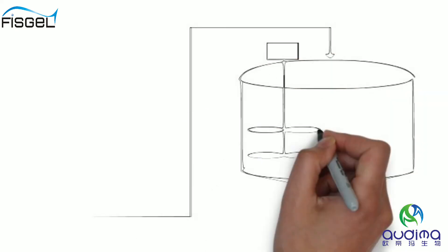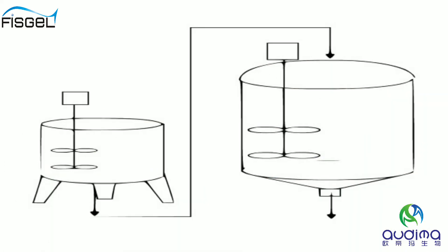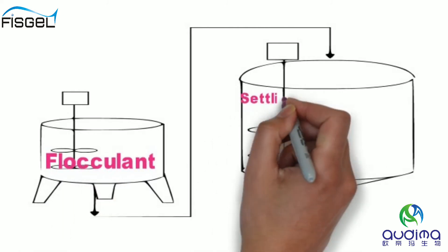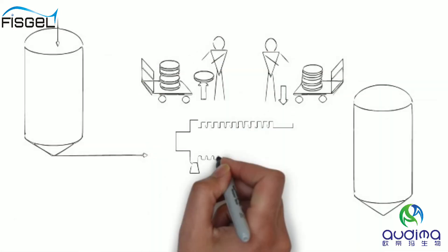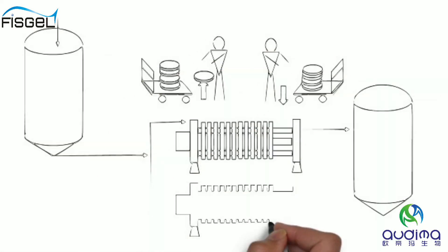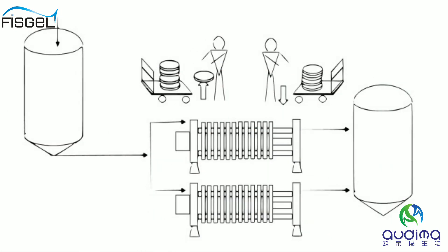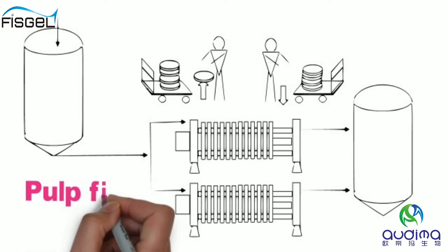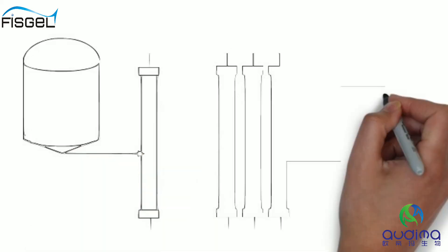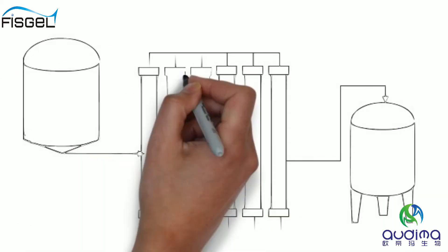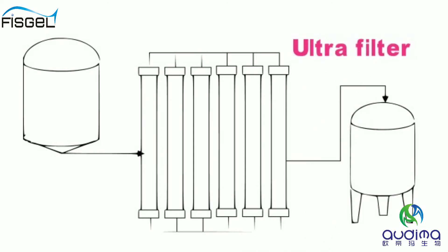Impurities are removed step by step in the order from large size to small size. The gelatin liquid is clarified by flocculation to remove large block impurities. Large particles of impurities are then removed through cotton cake filtration. Through ultrafiltration, small particles of impurities are removed and concentration is increased.